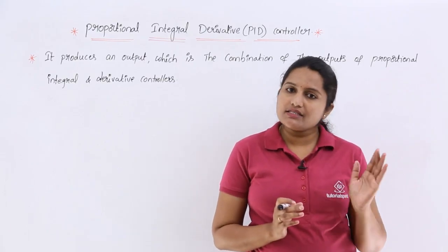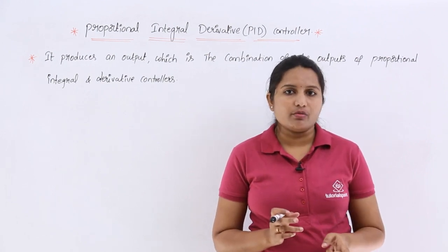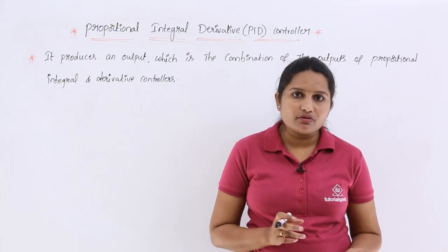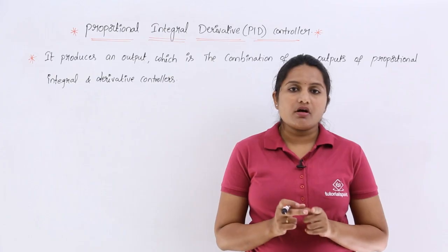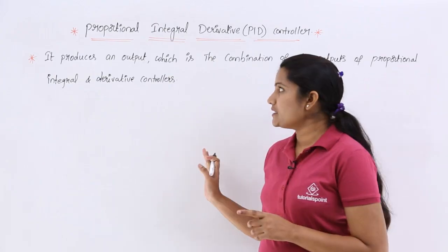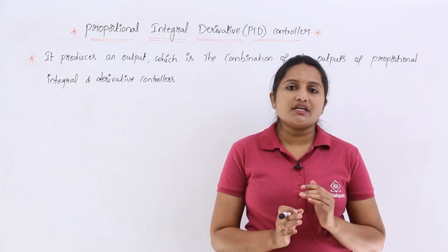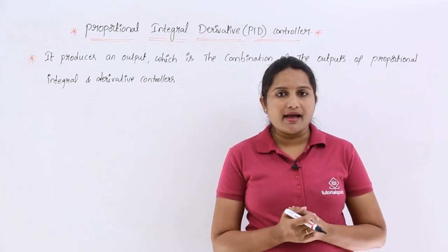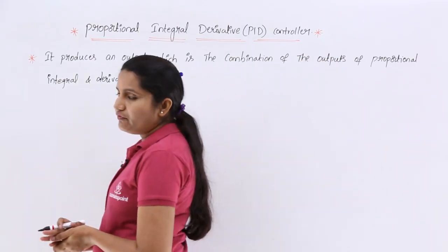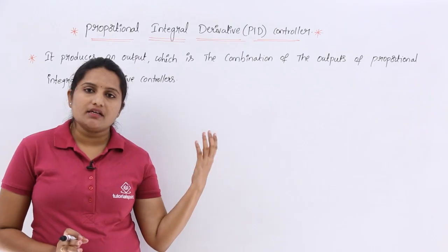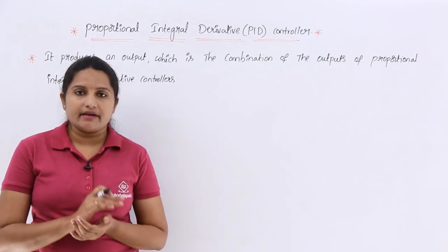In the case of derivative controller, we have a steady state error problem. In the case of integral controller, we have a stability problem. Both of these problems are also overcome by this proportional integral differential controller, generally called a PID controller. Now we will see how we can analyze that controller and sketch the block diagram of a control system with a PID controller.